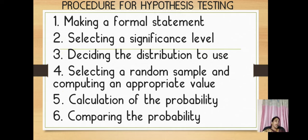Procedure for hypothesis testing. First procedure is, you have to make a formal statement. Next, you have to select a significance level. Third step, you have to decide the distribution to use. Fourth step, you have to select a random sample and compute an appropriate value. Fifth step, you have to calculate the probability. And sixth step, you have to compare the probability.